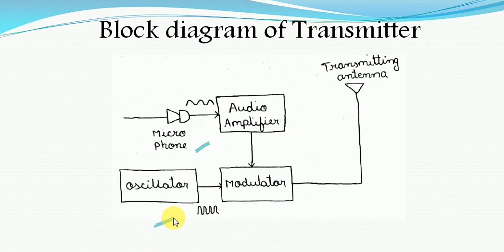Now let us see the third block, that is an oscillator. The oscillator simply generates a sinusoidal signal. The main purpose of an oscillator at this point is to produce a high frequency signal. We call that high frequency signal a carrier signal. In order to perform modulation on the message signal, we require a high frequency signal and this job is accomplished by using an oscillator circuit. Practically, a crystal oscillator is used for any application.